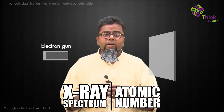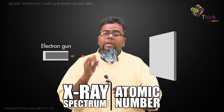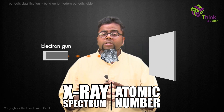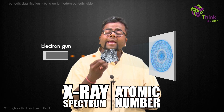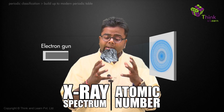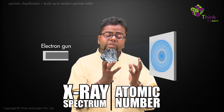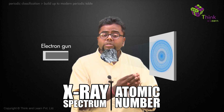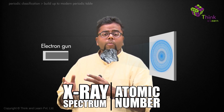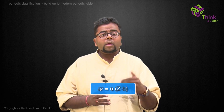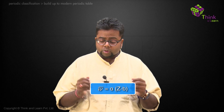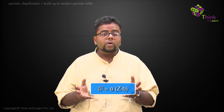He took high-energy electrons and focused them on a target made up of elements, and on the bombarding of the electrons with the target, x-rays were produced. He tried to find out a relationship between the x-ray frequencies which were emitted and the atomic number, and he came to the conclusion that the square root of the frequency is equal to a(Z - b). This was the relationship that he could find out.